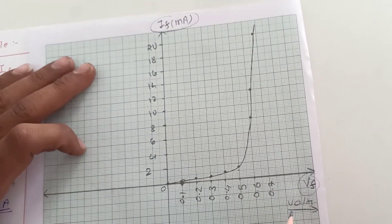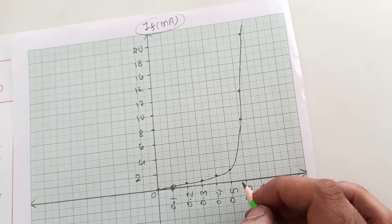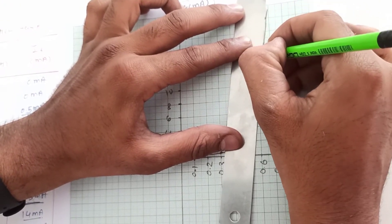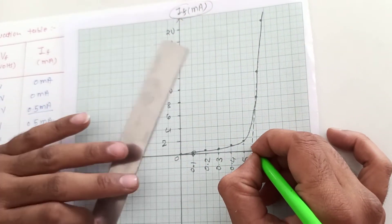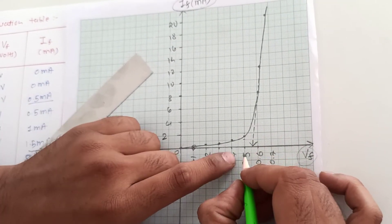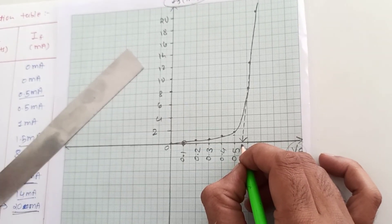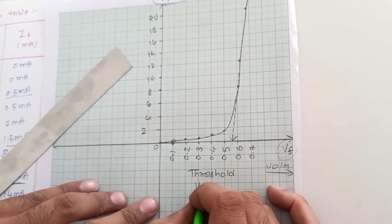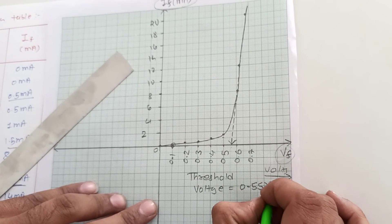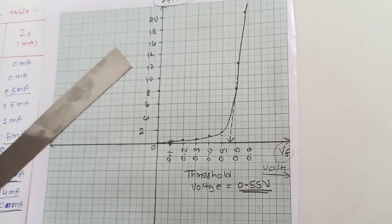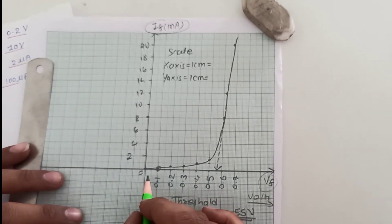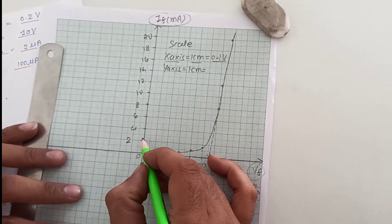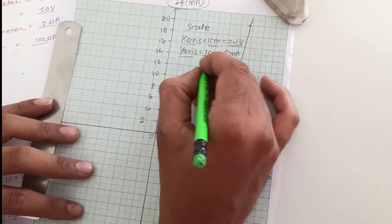This is the forward characteristics of the PN Junction Diode. To find the threshold voltage, we put a scale on these points and take a line which intersects at the voltage — this voltage is the threshold voltage, which is 0.55 volt. So the threshold voltage equals 0.55 volt, which is the answer for the forward bias. Scale: x-axis 1 cm = 0.1 volt; y-axis 1 cm = 2 milliampere.